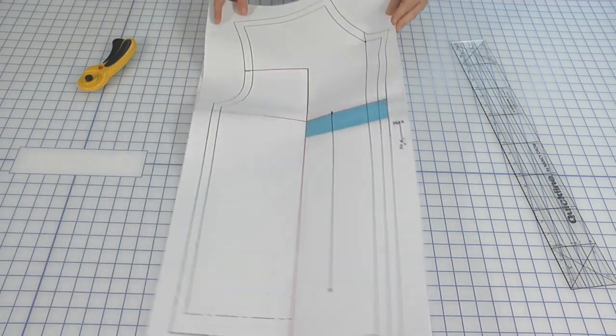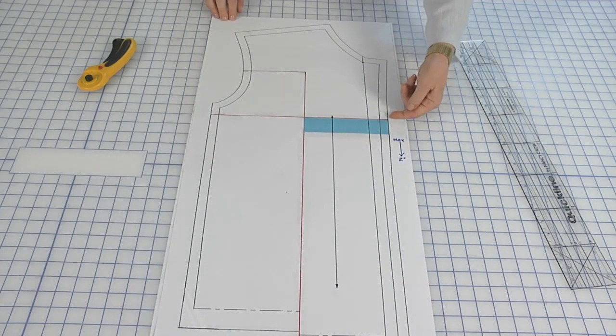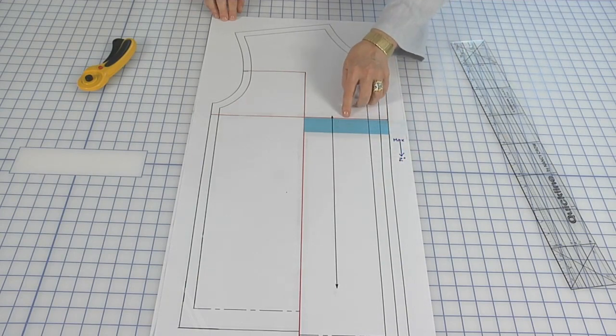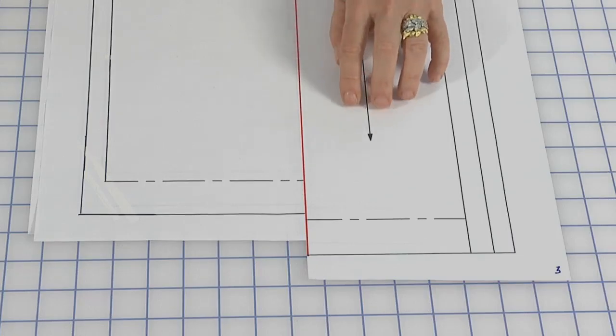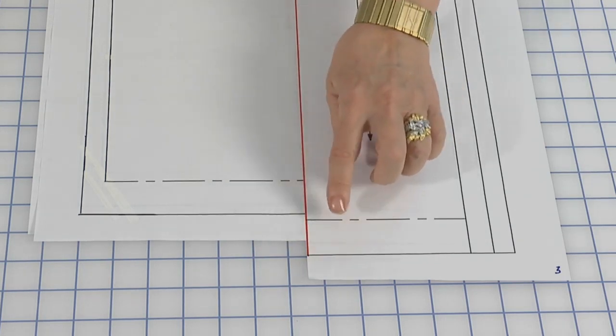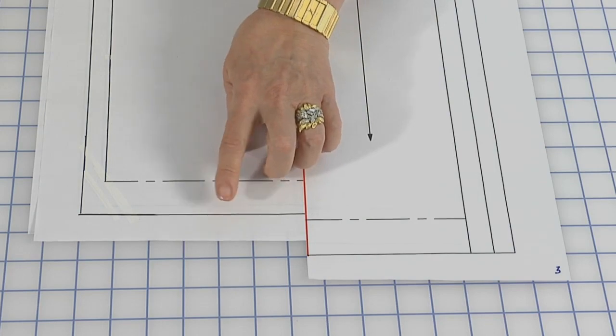Here is the same front with the paper added with the maximum of two inches down. Now, I've only added about an inch and a half. You'll notice with this section having slid down that the hem is now uneven and will have to be trued up.